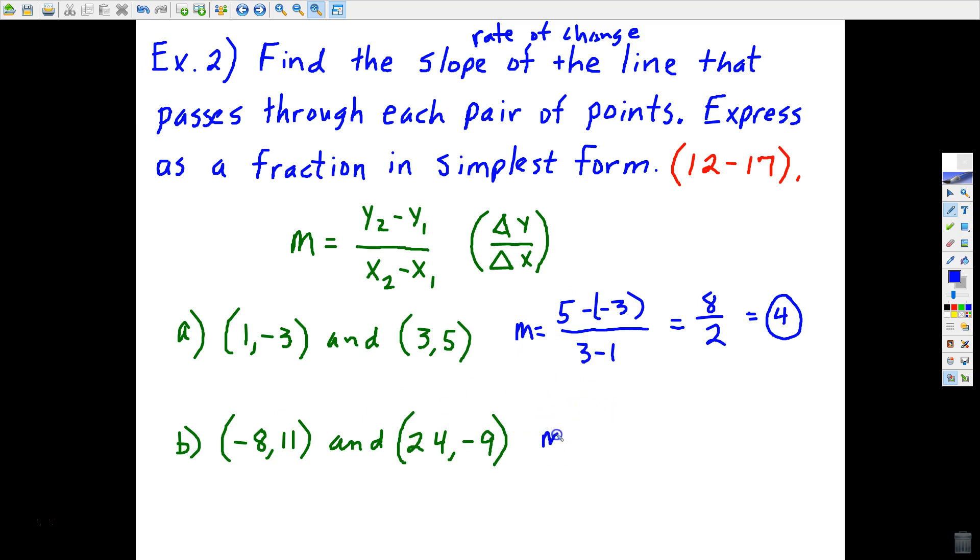We'll go ahead and do letter B. The slope of this line will be negative 9 minus 11, change in Y, divided by 24 minus negative 8, the change in X. So negative 20 over 32, reducing. We can divide 4 into both of these. 4 into negative 20 is negative 5. 4 into 32 is 8. Negative 5 eighths. So that's what you're going to do on 12 through 17. Should be pretty self-explanatory.